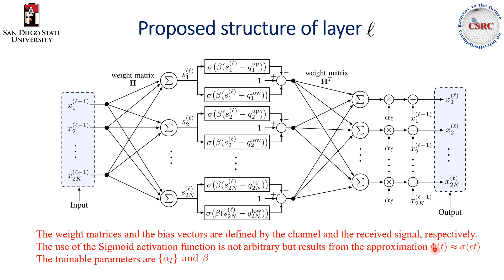So this is good because the channel keeps changing, so we need the weight matrix and the bias vectors to be adapted. It is unlike the conventional DNN where the weight matrix and the bias vectors are fixed.